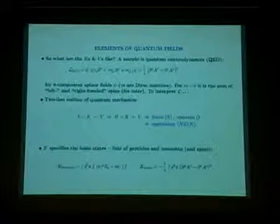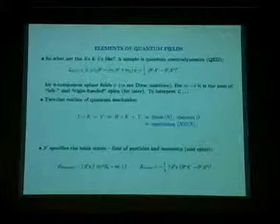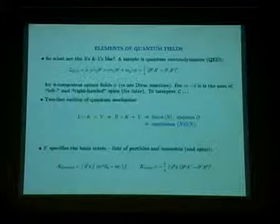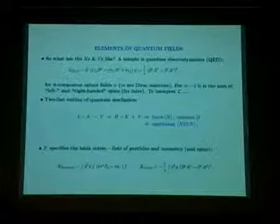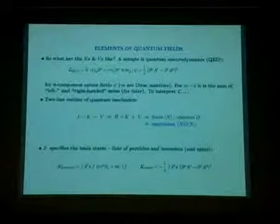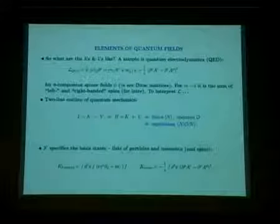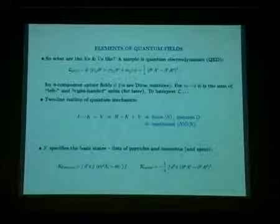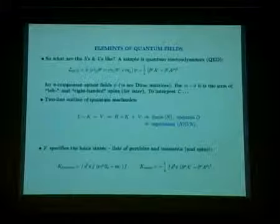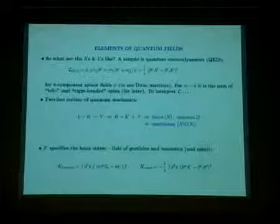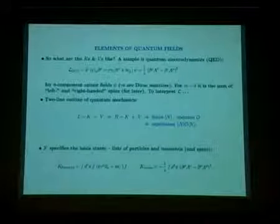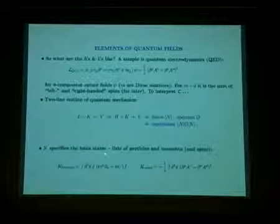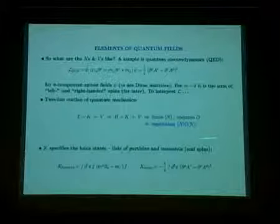To interpret this Lagrangian in terms of the language we gave before, to relate it to the underlying Schrodinger equation, we have a two-line outline of quantum mechanics. The first line is semester one, the second line is semester two. The first line says you start with a classical Lagrangian: L equals K, a kinetic energy, minus V, a potential energy. By a transform, you discover that the Hamiltonian is K plus V. This works for quantum electrodynamics. From this Hamiltonian, you determine what the eigenstates are, labeled by N, and various other operators. You get expectation values of various physical quantities of interest.